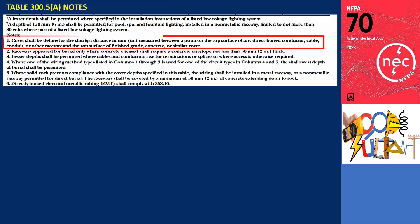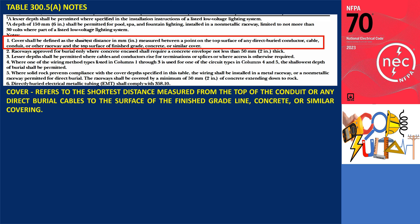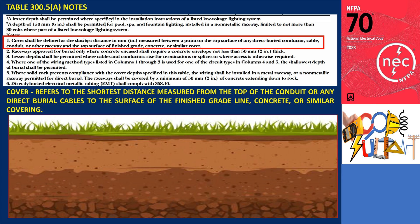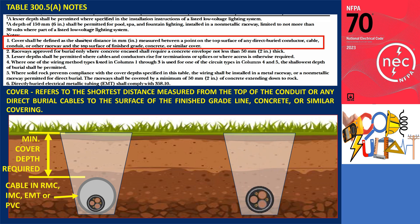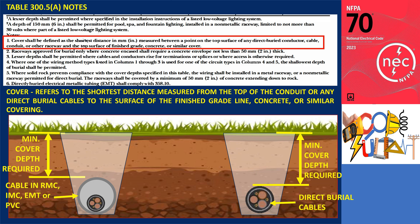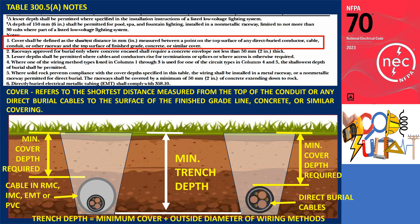For Note 1, cover shall be defined as the shortest distance in millimeters or inches, measured between a point on the top surface of any direct buried conductor, cable, conduit, or other raceway and the top surface of finished grade, concrete, or similar cover. For example, in a wiring method installed in RMC, IMC, EMT, or PVC, the depth shall be measured from the top surface finish grade line to the top of the conduit. For direct burial cable, the measurement is taken from the top surface of the cable. Therefore, the minimum trench depth must equal the required depth of cover plus any additional depth needed to accommodate the outside diameter of the cables or raceways being installed.